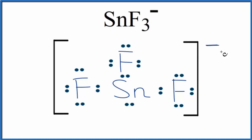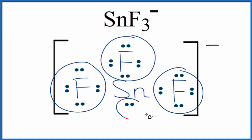If we wanted to know the molecular geometry for SnF3-, we'd count up the number of groups bonded to the central tin. We have 1, 2, 3, 4. So we have 4 things and then 1 lone pair.